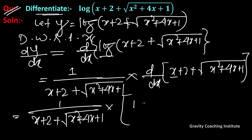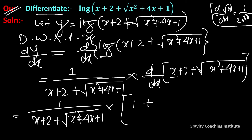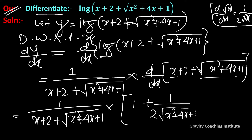Differentiation of x gives 1, and 2 gives 0. For the square root term, using the rule that the derivative of √x is 1/(2√x), we write 1 upon 2√(x² + 4x + 1), multiplied by the derivative of (x² + 4x + 1), which gives 2x + 4.